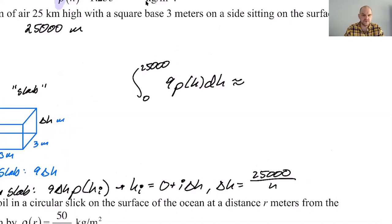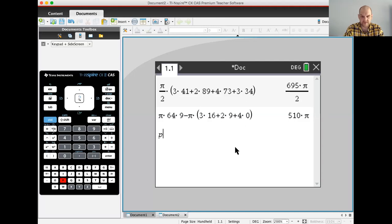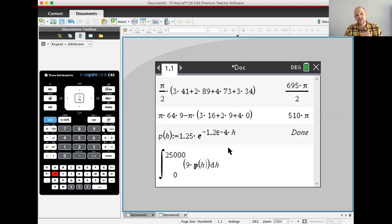All right. Calculator for sure, because not a clue. Not a clue, nor do I even want to begin to try to do this. So I'm going to store P of H and I'm going to keep saying rho, but that's definitely P. 1.25 E to the negative 0.00123, 1, 2, H. Okay. Here we go. It's going to be the integral from zero to 25,000, nine. So that's the area of the base times the height is the DH for each slab. And then the density is rho of H and then DH. So nine is meters squared. DH is another meter. That's meters cubed. Rho is kilograms per meter cubed. So the final answer here is just going to be kilograms. So let's see what we get.